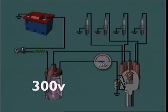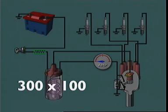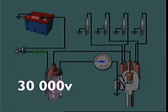Then, if this coil is 100% efficient, the maximum voltage available from the secondary winding would be 300 volts multiplied by 100. That is, 30,000 volts.